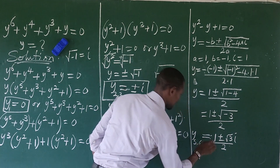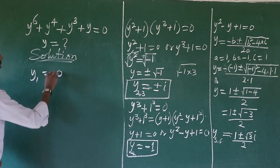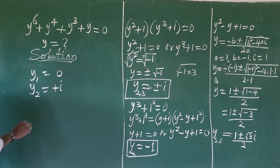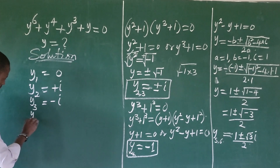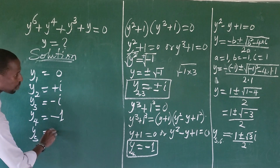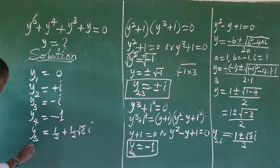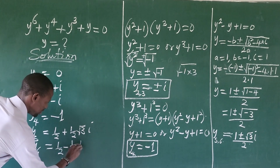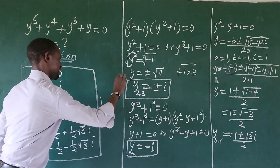So in all, let's bring out the 6 roots to our hexic equation. y₁ = 0, y₂ = +i, y₃ = −i, y₄ = −1, y₅ = (1 + i√3)/2, and y₆ = (1 − i√3)/2.